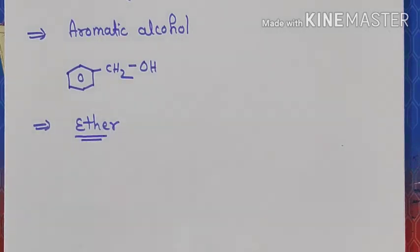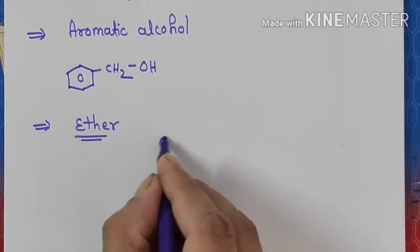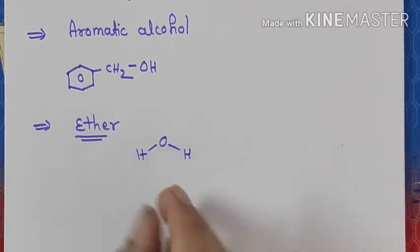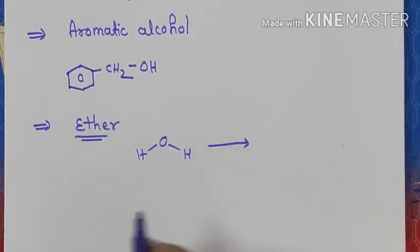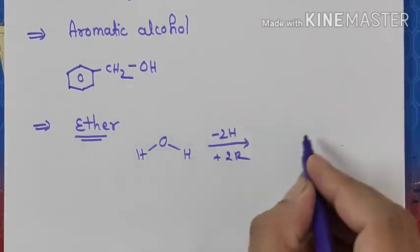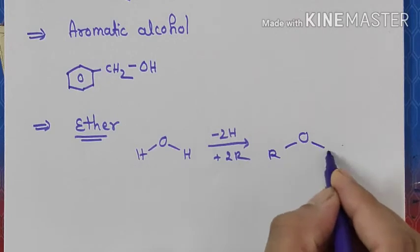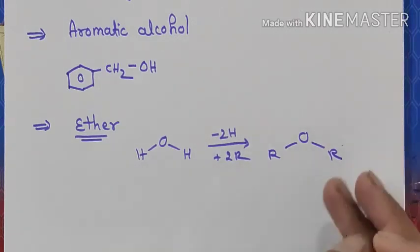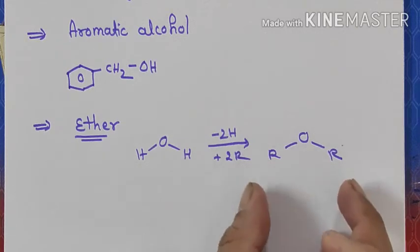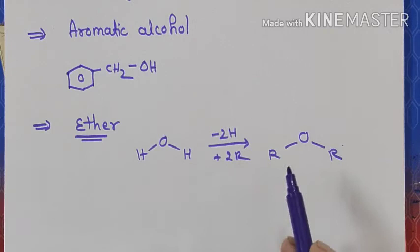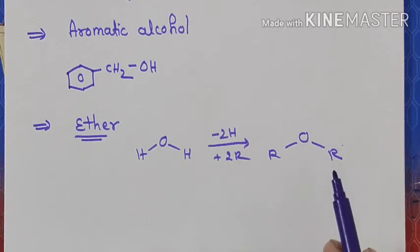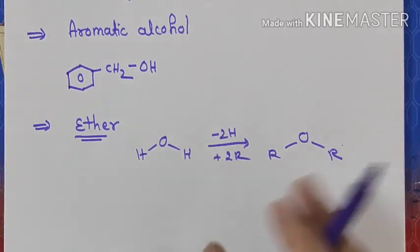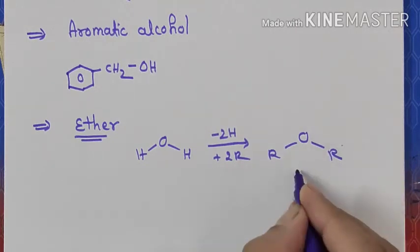Next is ether. What is ether? Ether is said to be a derivative of water. We know water is H2O. If I replace both the hydrogens by R — that is, -2H +2R — the product obtained is ether. This is the simplest definition. When both hydrogens are replaced by either an alkyl group, or both aryl groups, or one aryl and one alkyl, in all cases that will be termed as ether.